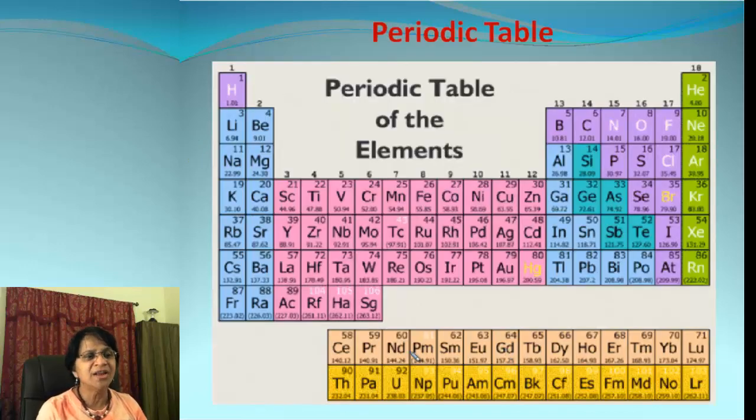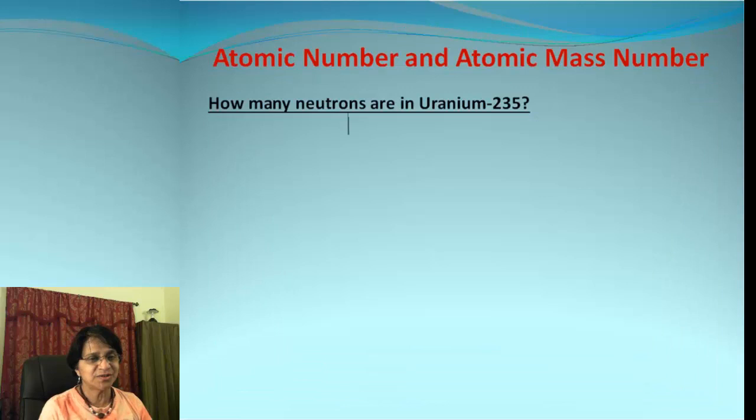Now before we move on to uranium-235, let's look at uranium. And in this table, we find uranium right there. If you look carefully, there is number 92. That number is the atomic number for uranium. And then the atomic mass number is given to us as 235. So let's see how we are going to find out the number of neutrons in uranium-235.